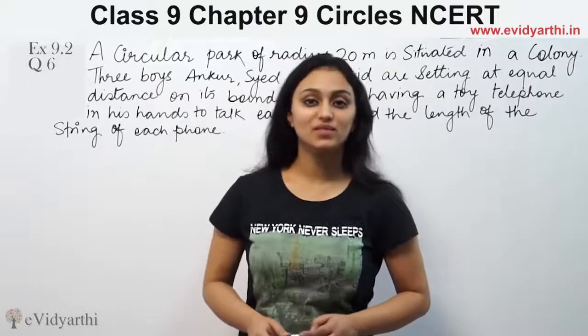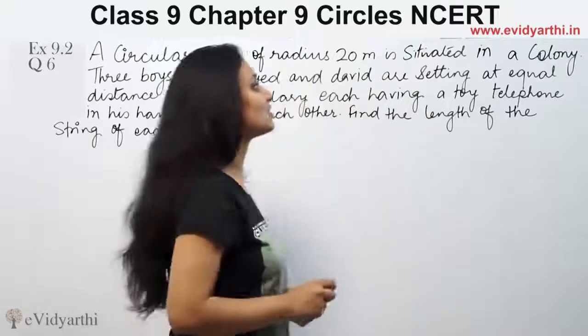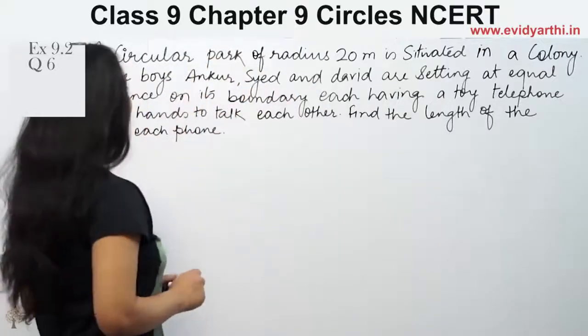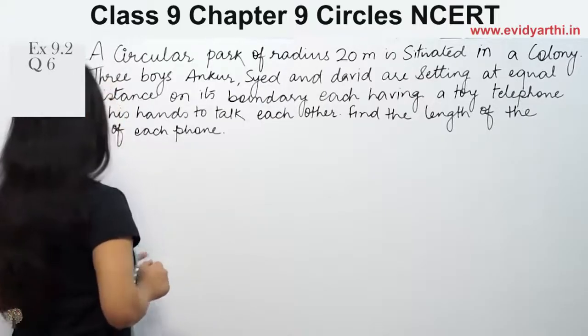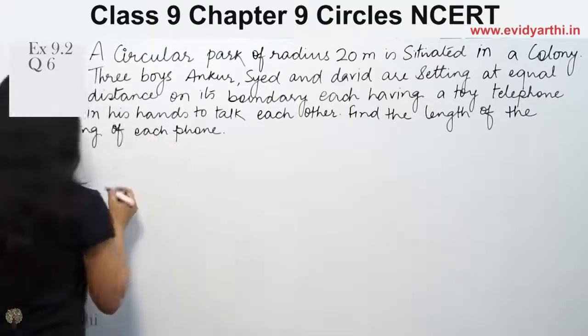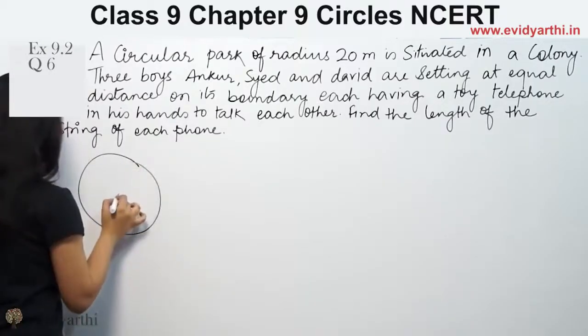Hi, this is Khushbu with another question of circles. This is question number 6 from exercise 10.4, page 179 from NCERT. It says a circular path with radius 20 meters is situated in a colony. So our path is a circle here whose radius is given as 20 meters.